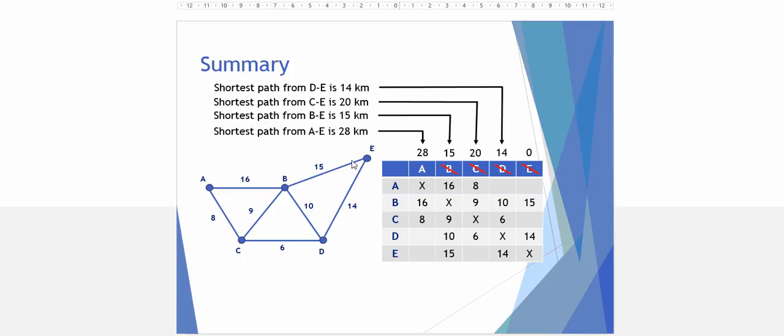Finally, just having a quick look. We can see here that 14 is the shortest possible distance from D to E. 20 is the shortest possible distance from E to C. If we go E to D to C, that's 14 plus 6 is 20. 15 is the shortest possible path length from E to B. And finally, 28 is the shortest possible path length from E to A. We went 14 to D, 6 which gives us 20 to C, plus the final 8 that gives us 28 to A.